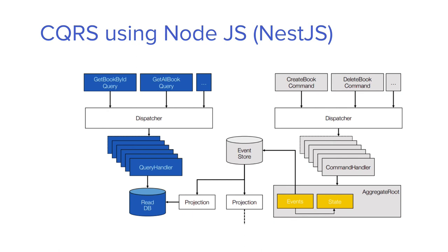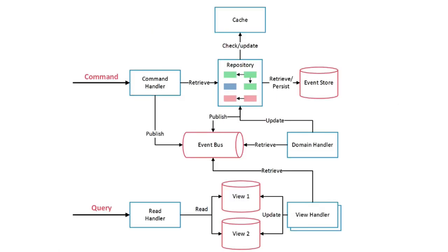I've now covered the basics of all these different architecture patterns — CQRS, event-driven, API gateway, and many more. Now it's time to start with Node.js, where we'll write microservices using Docker Compose. You just need Docker running to spin up containers: one for Node.js, one for MySQL, and one for RabbitMQ, which we'll use for implementing the event-driven mechanism. We'll implement CQRS hands-on so you get more clarity.